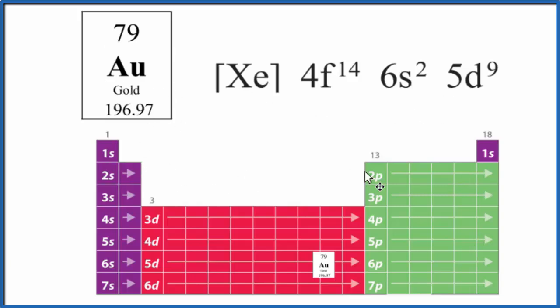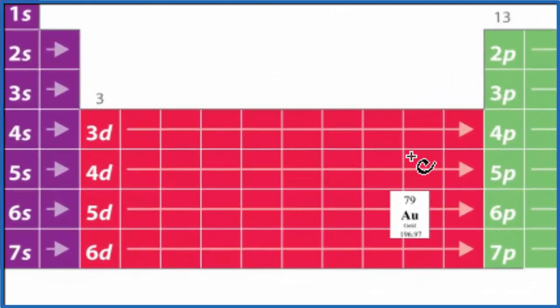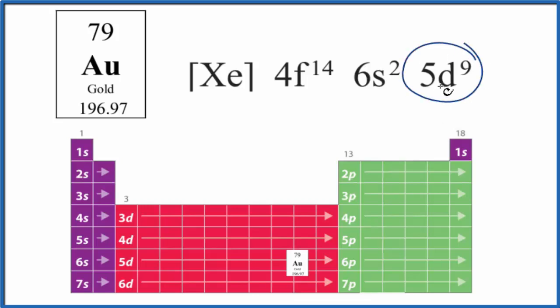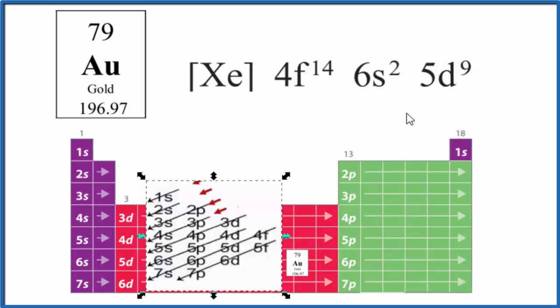If you looked at the periodic table, you follow the patterns for the different groups and periods, you would see that gold should end in 5D 1, 2, 3, 4, 5, 6, 7, 8, 9. So according to this, it would end in 5D9. You could look at this chart here as well, and you would end up with 5D9.